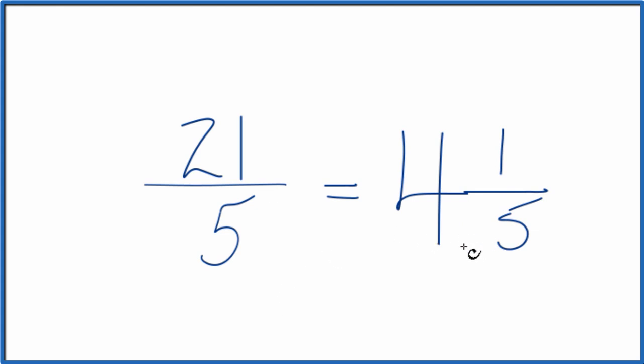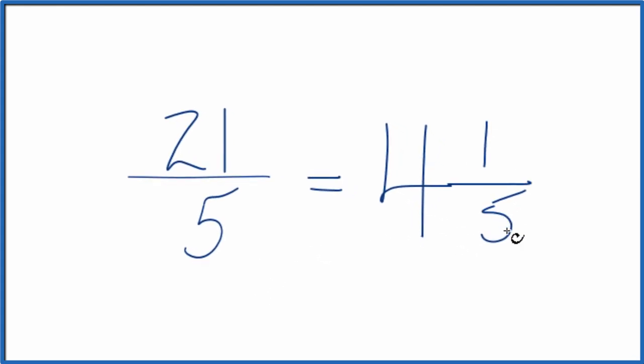And 21 fifths, you could write that as a mixed number, 4 and 1 fifth. But in answer to our original question, the fraction 21 fifths, we can't reduce this any further. It's already simplified.